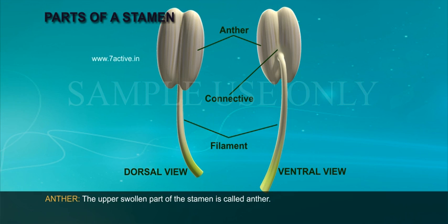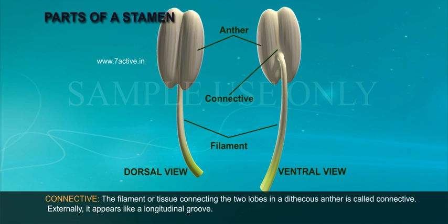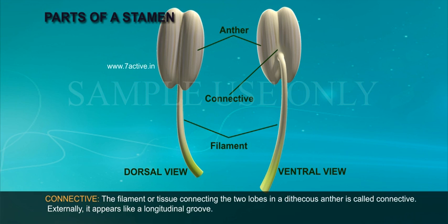Anther: The upper swollen part of the stamen is called the anther. Connective: The filament or tissue connecting the two lobes in a dithecous anther is called the connective. Externally, it appears like a longitudinal groove.